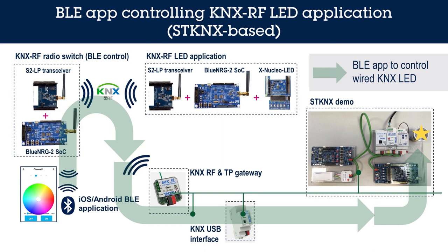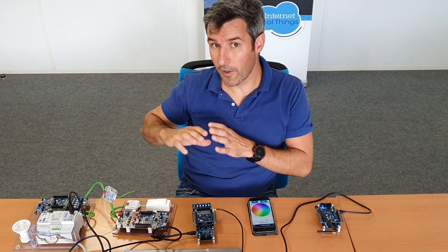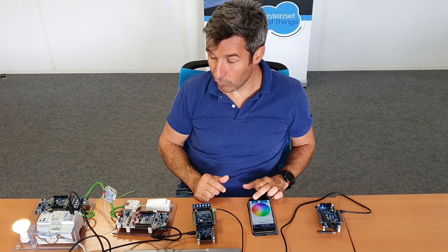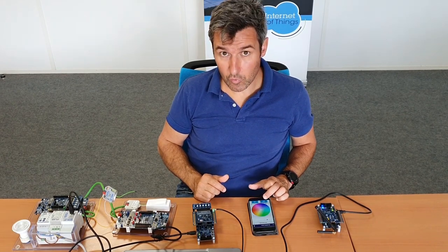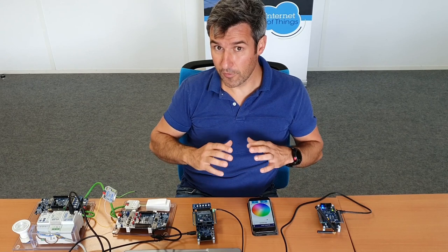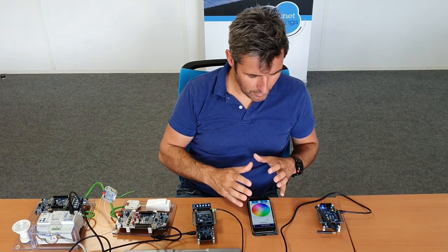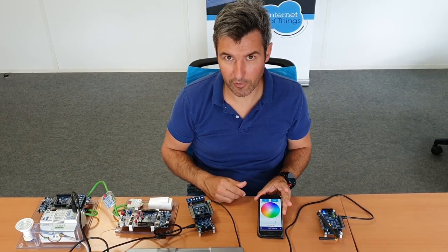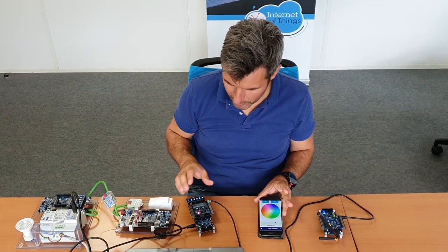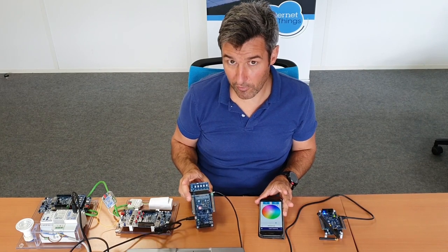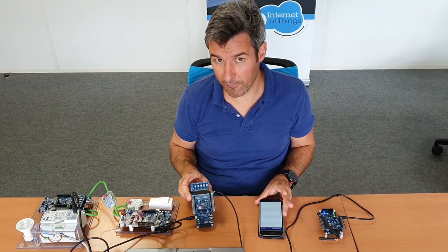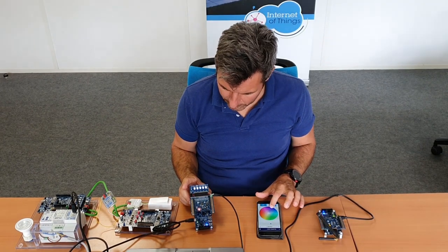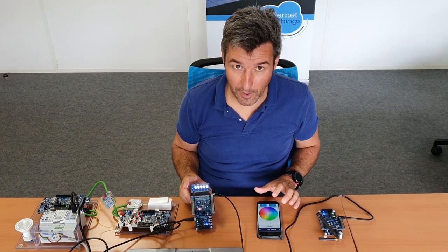To do so, I select another channel to control another light — this one — and I am able to switch it on and off in the same way using the same application. With the BLE application, we can not only control switching on and off, but also the dimming or color selection of the KNX RF light application. I can control the dimming using the app like this.